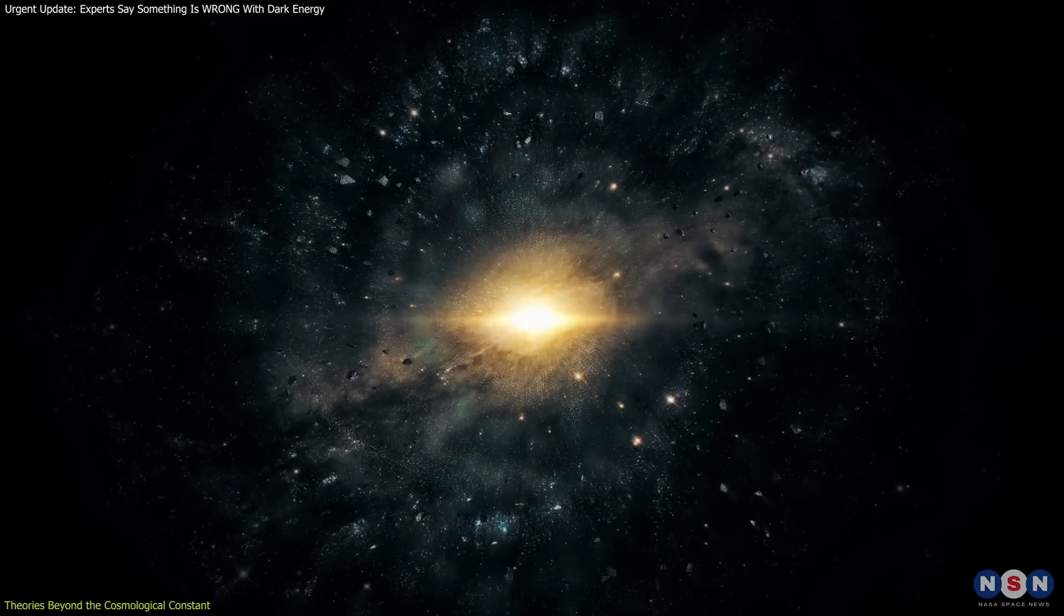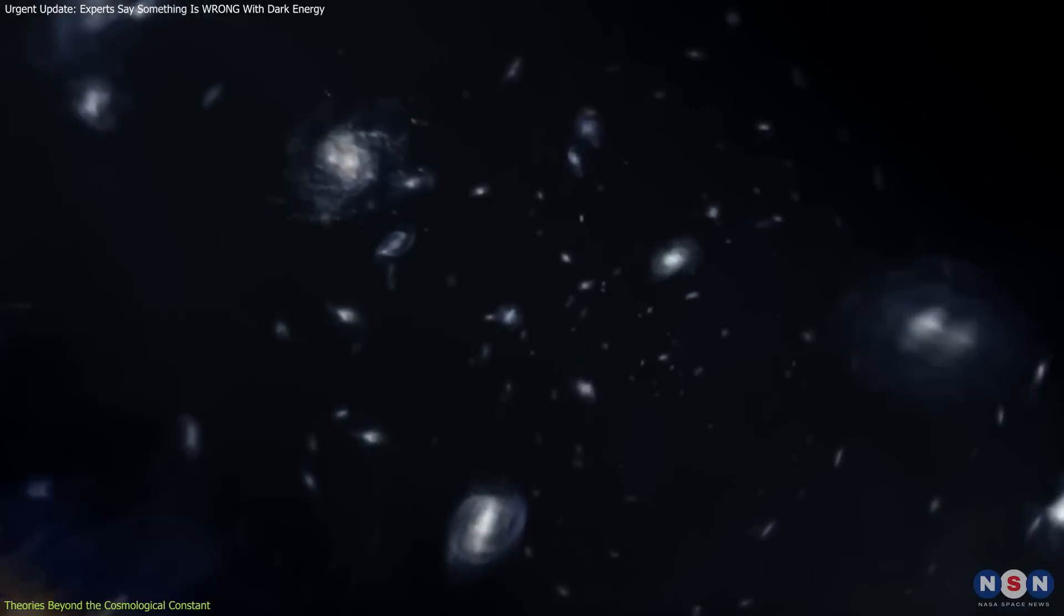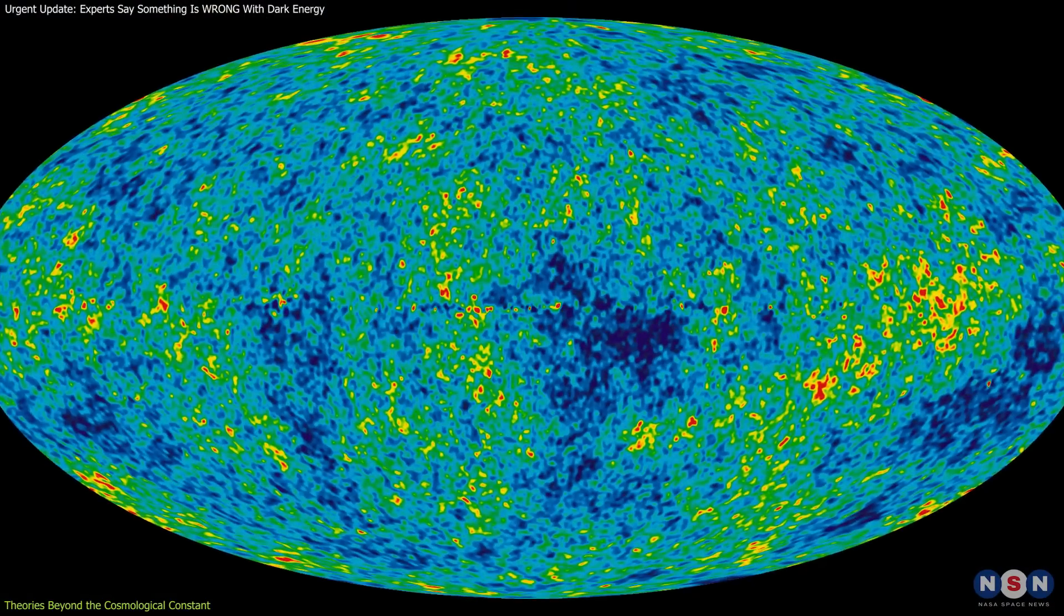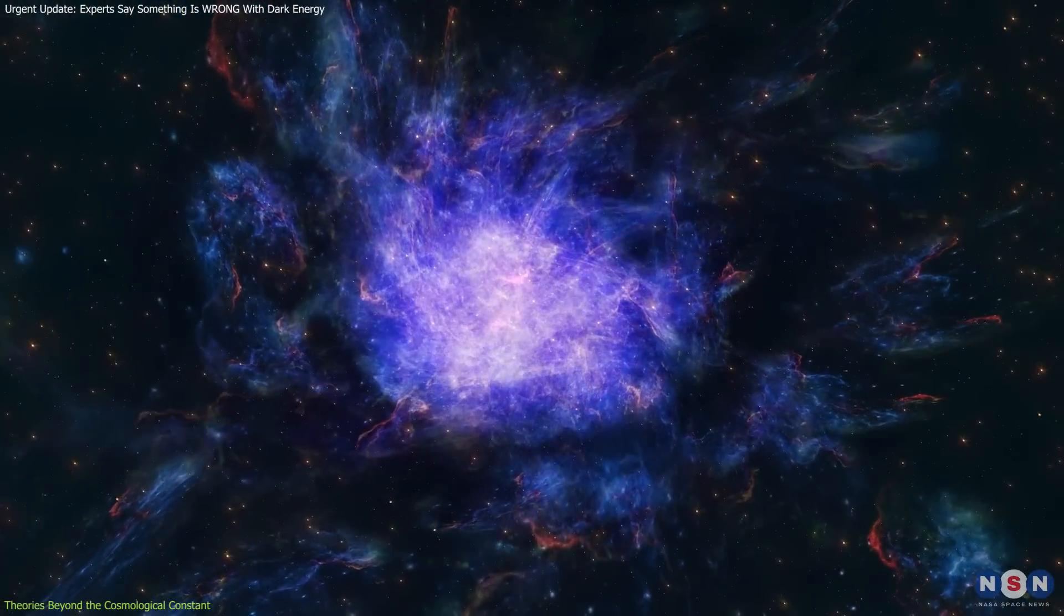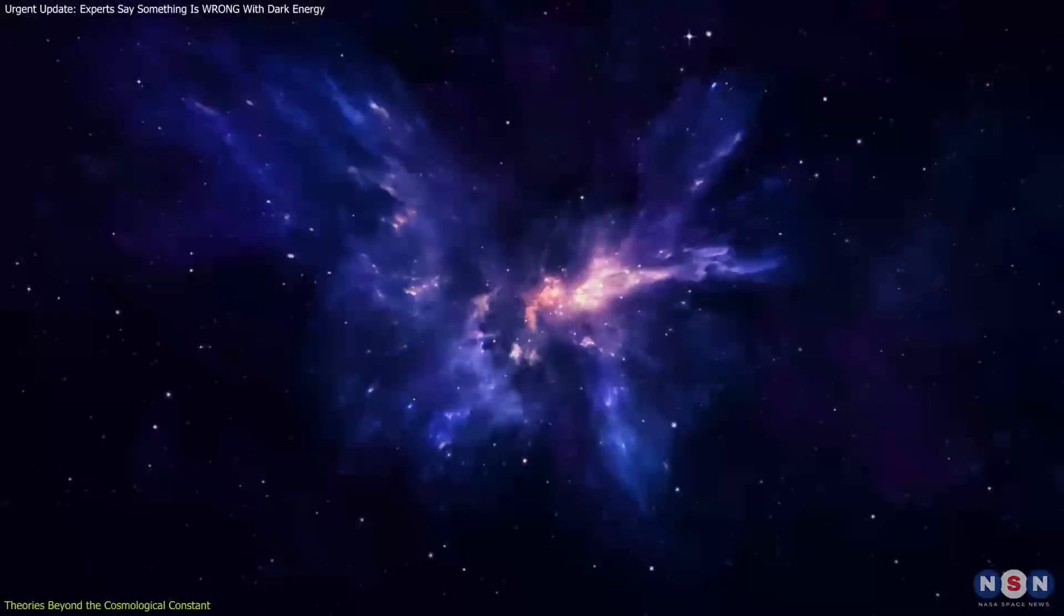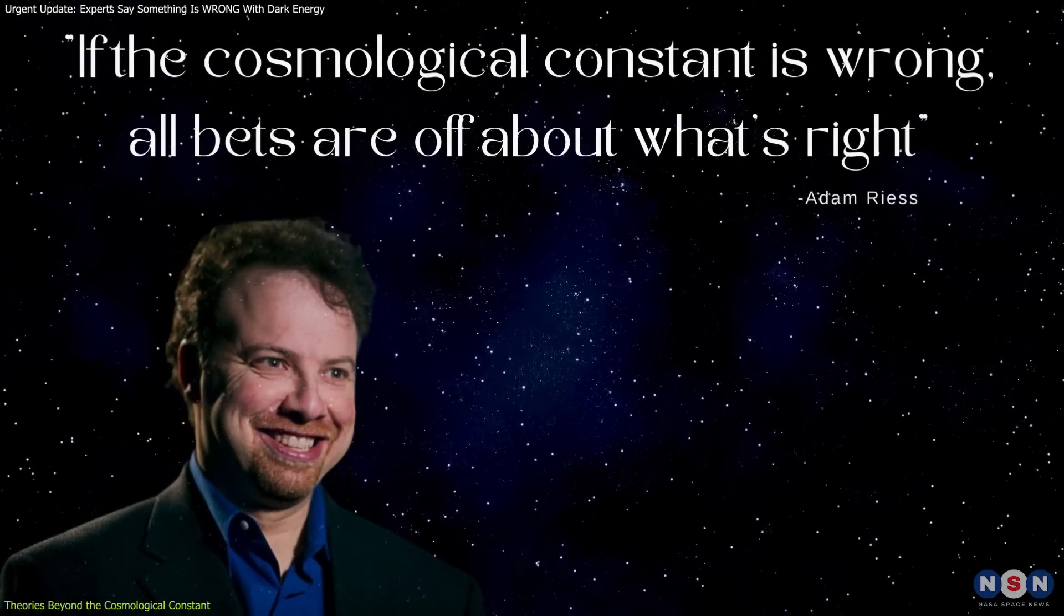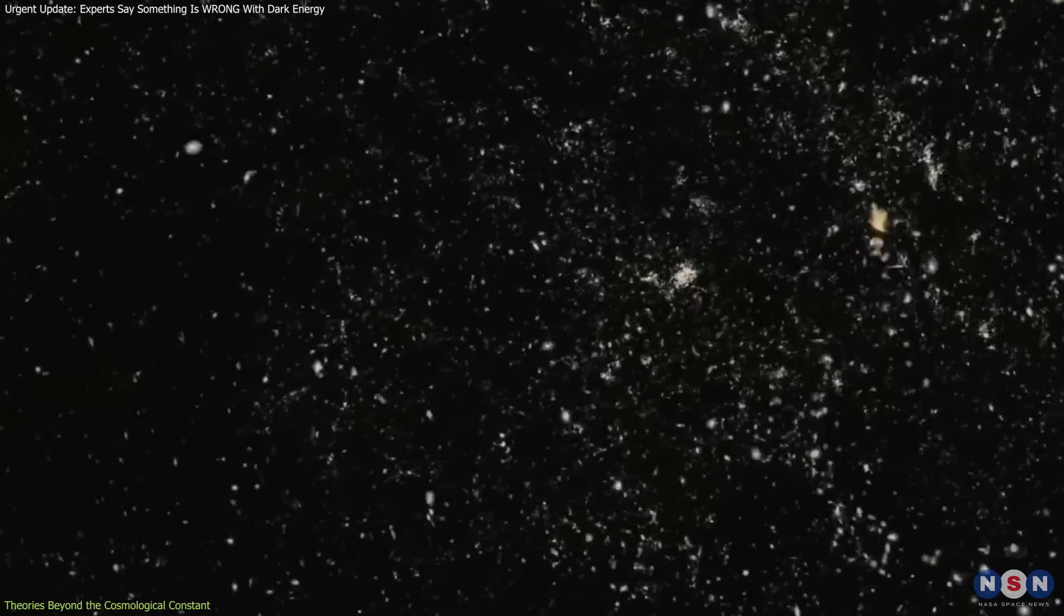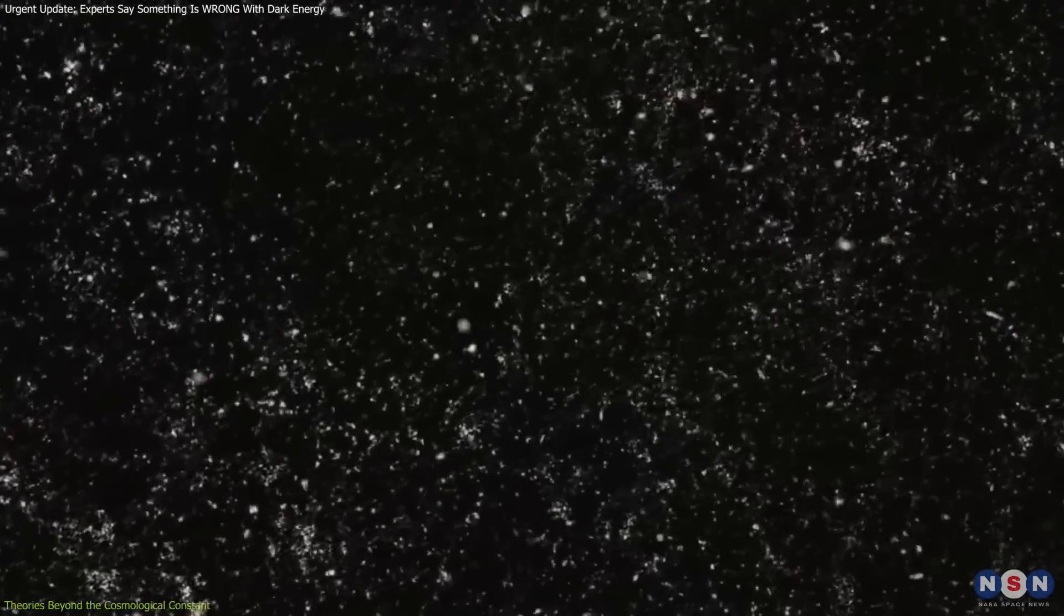If true, they could open the door to a deeper understanding of how cosmic forces interact over time. The evidence for these models comes from sophisticated analyses of galaxy distributions, supernovae, and the cosmic microwave background, all of which point to the possibility of a more complex, evolving form of dark energy. However, even with these compelling theories, scientists remain cautious. As Adam Riess, a cosmologist and Nobel laureate, remarked, if the cosmological constant is wrong, all bets are off about what's right. For now, the focus is on gathering more data and refining these theories to better explain the universe's accelerating expansion.